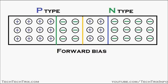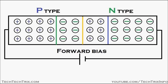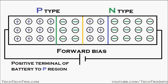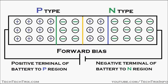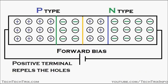Now let's see forward bias. In forward biasing, the positive terminal of the battery is connected towards the P region of the PN junction, and the negative terminal of the battery is connected to the N region of this PN junction semiconductor.